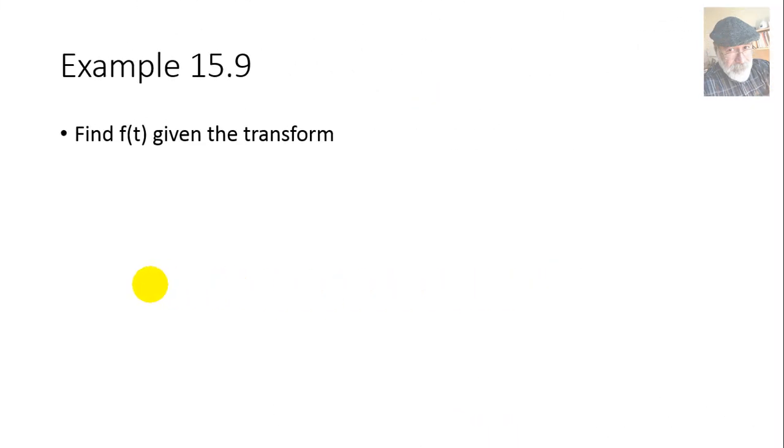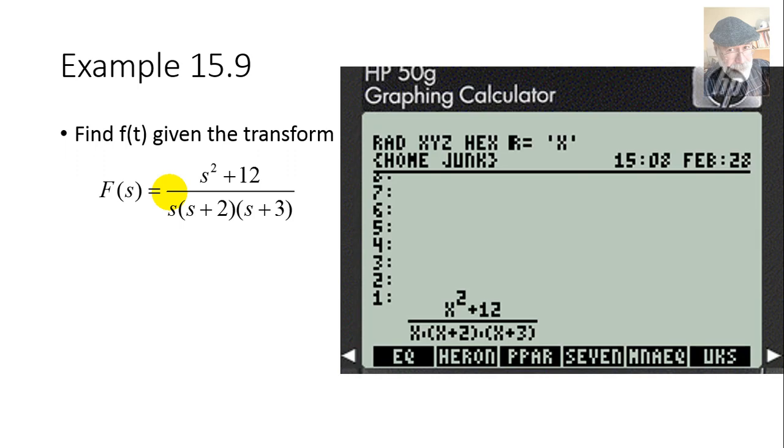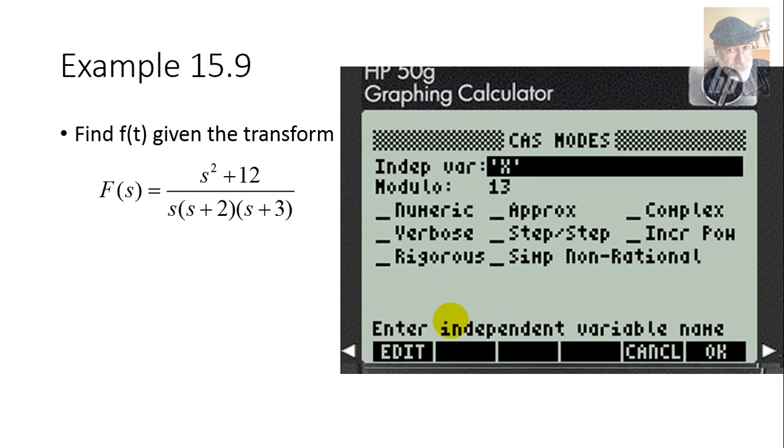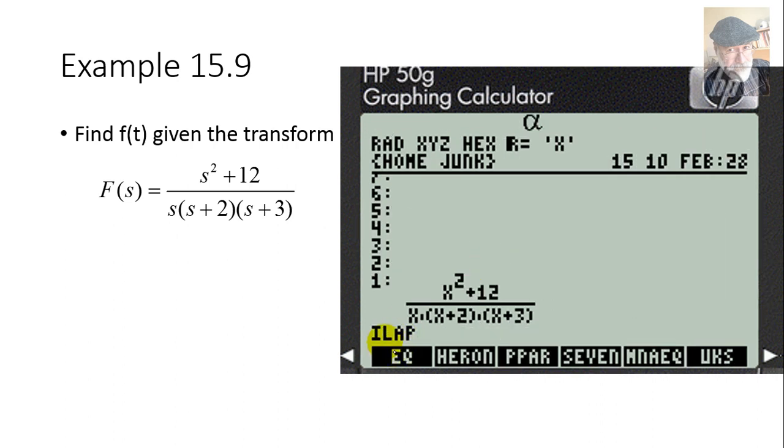Next example, example 15.9. We are given this transform, and we need to find f(t). I do the same. I type that F(s) using X in the calculator. Make sure that the independent variable is X, or you will get gibberish, if not an error message, out of the calculator, right? So, as usual, make sure this is X, the independent variable, mode CIS, clear all of those radio buttons, and then you are ready to ask for the inverse Laplace.